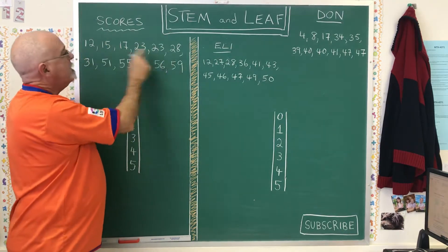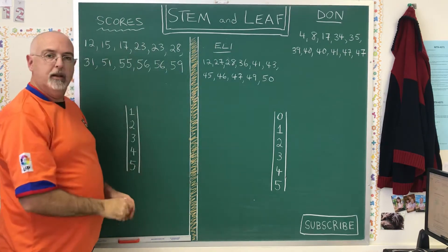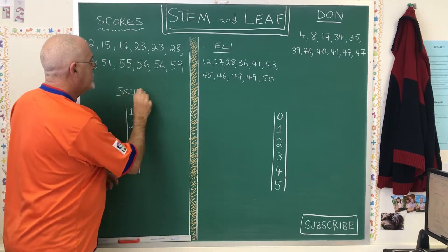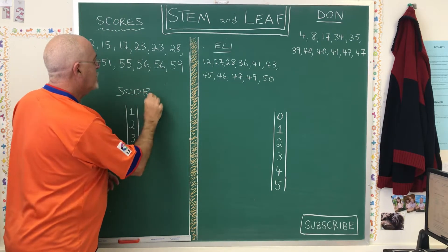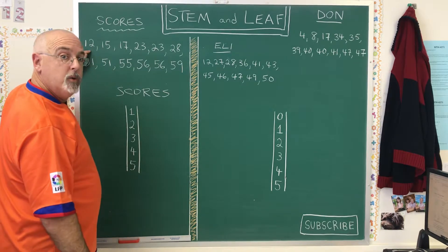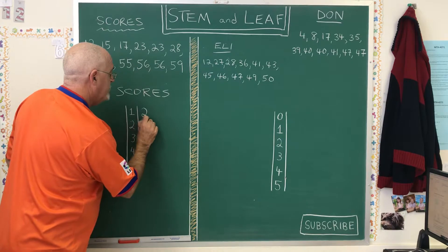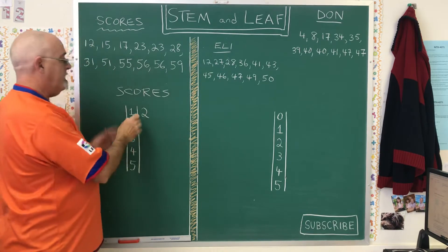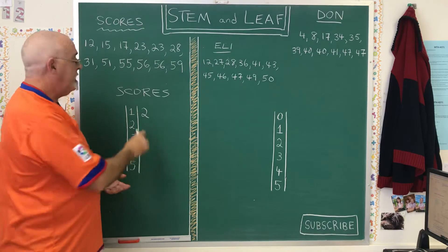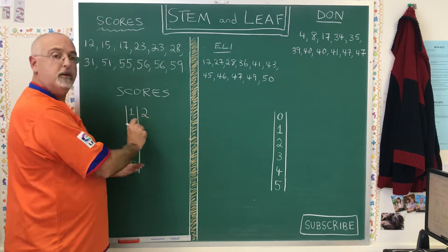There are only 12 values in it, and I'm going to put those 12 values into my stem and leaf table. The first thing I'll do is put a title — 'Scores.' The first value I have is a 12. The way I put that in is I put a 2 here beside the 1. The 1 between the bars is the first digit of a two-digit number, and the 2 that I write here is the second digit, so I can read that it's 12.